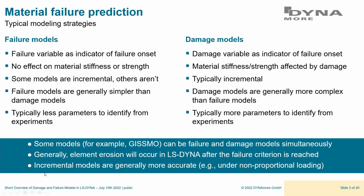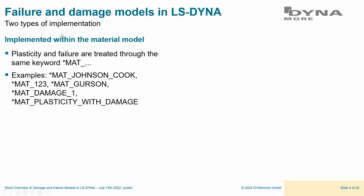Incremental models tend to be more accurate because they account for non-proportional loading paths throughout deformation. In LS-DYNA there are two kinds of implementation: one where the failure or damage model is embedded in the material model — plasticity and failure through the same keyword, such as MAT24 with the FAIL flag — and many others like MAT Johnson-Cook, Gurson plasticity with damage, and so on.